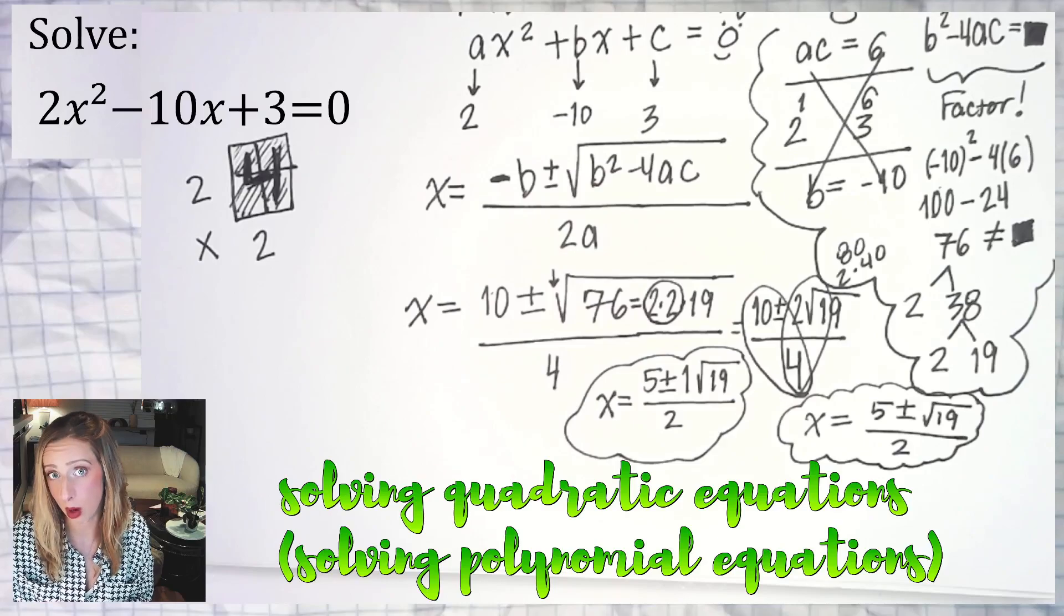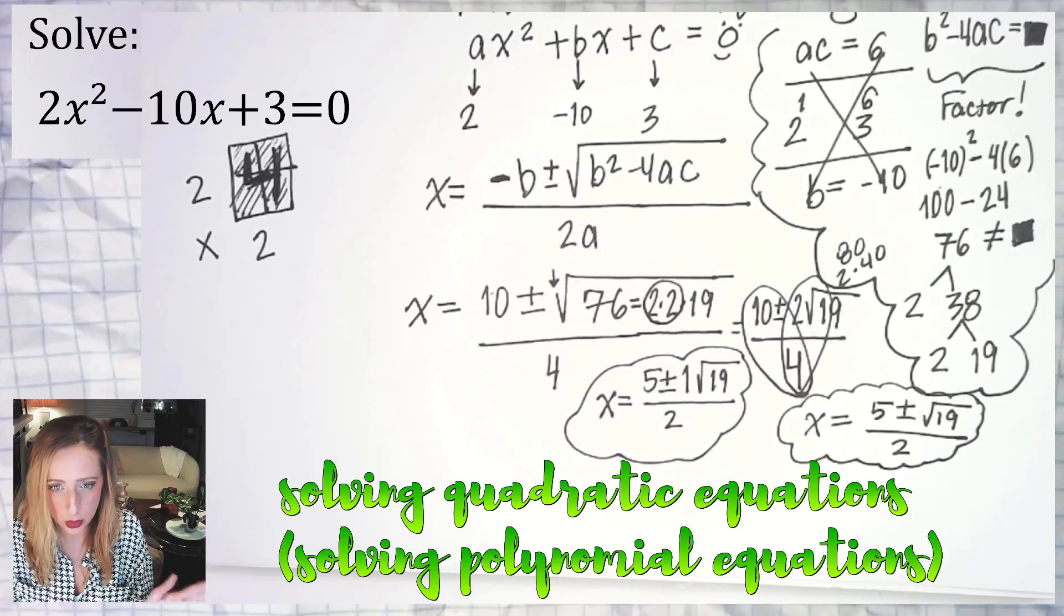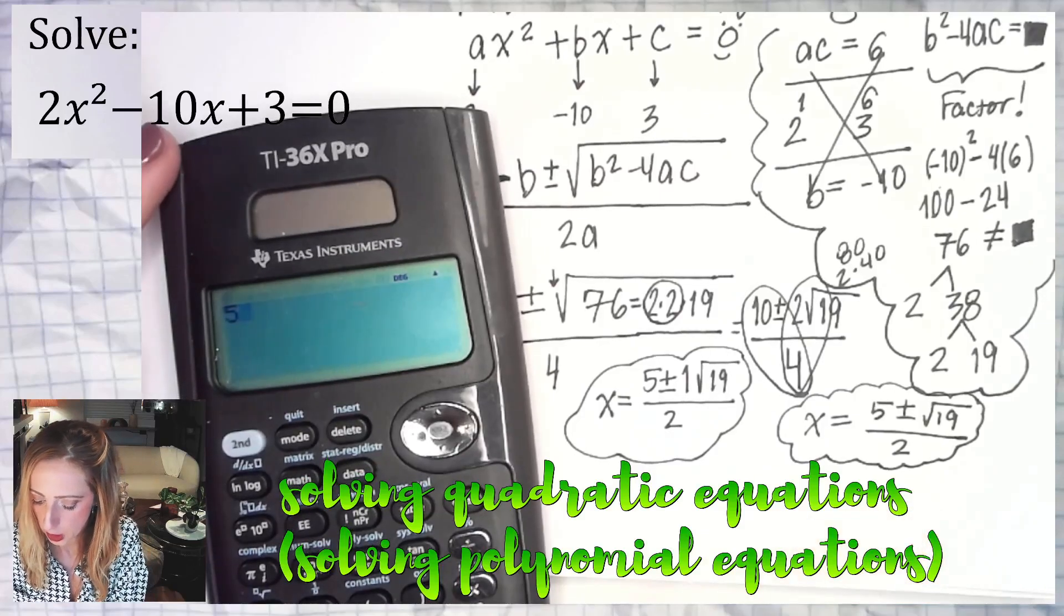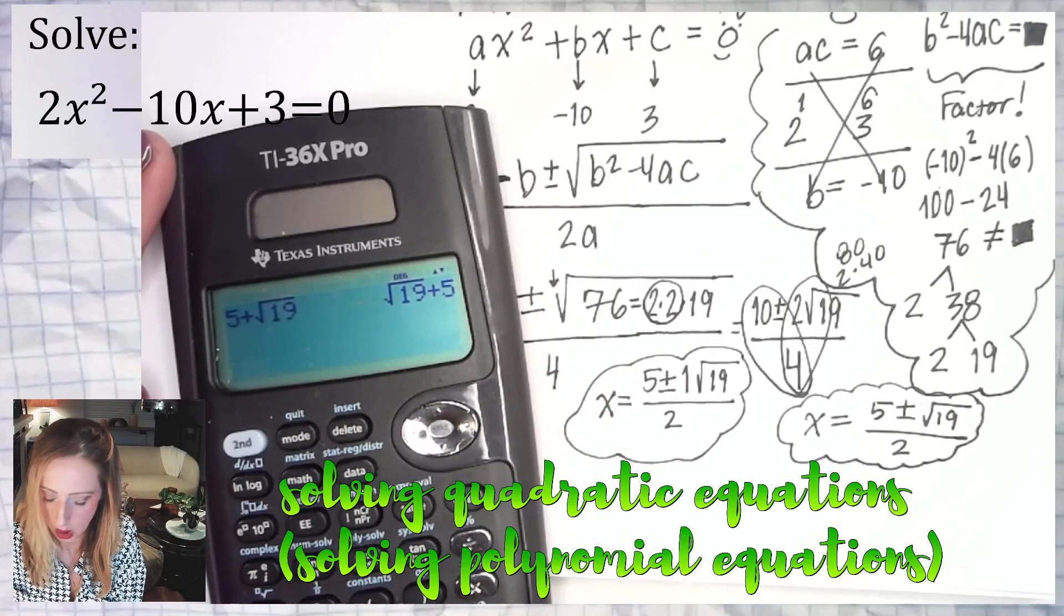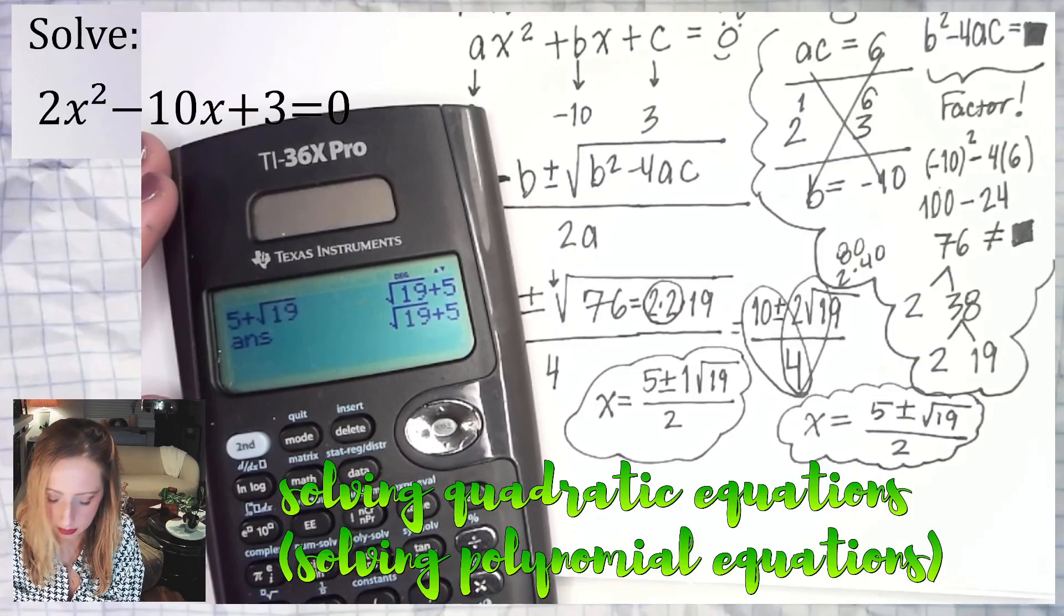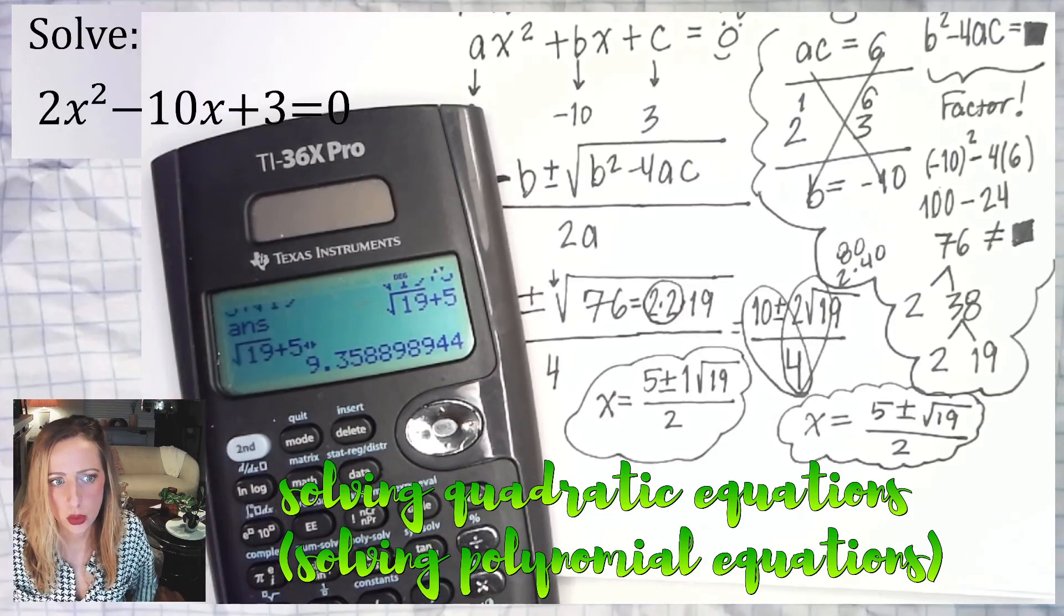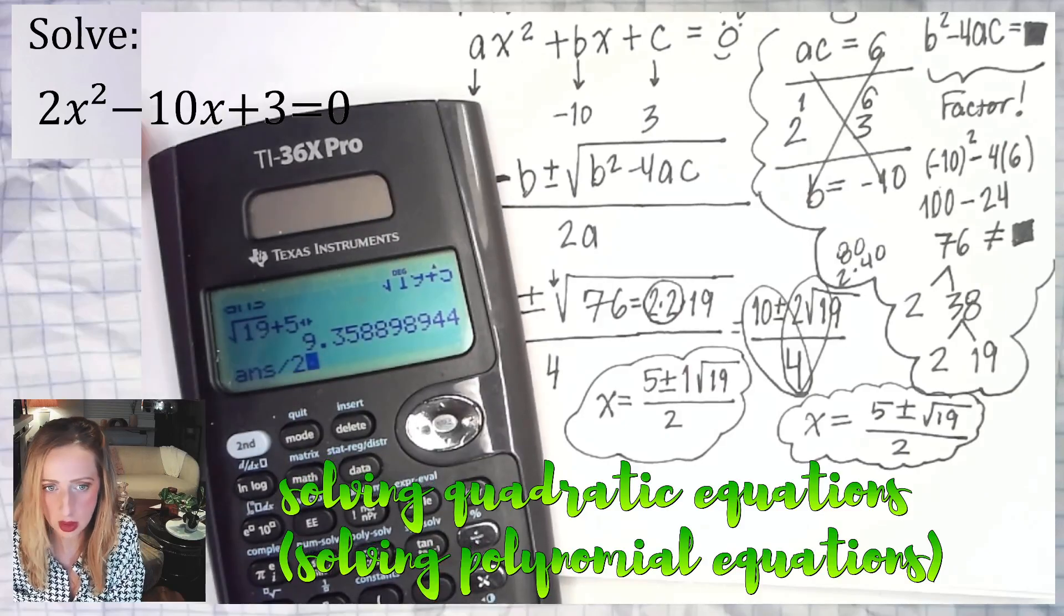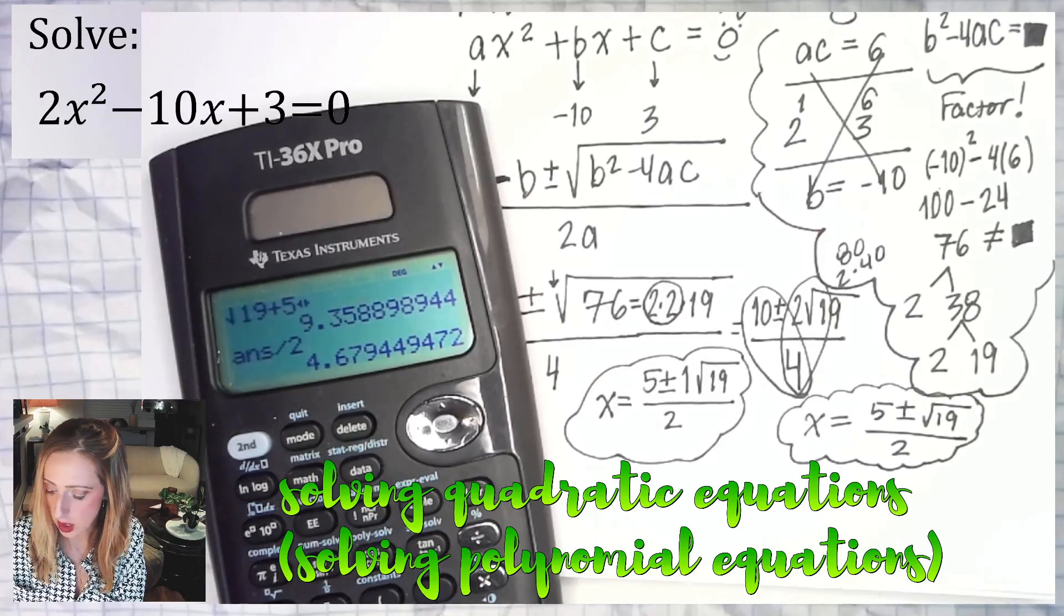However, if we wanted what we call an approximate answer where rounding will be involved, that means you bust out the calculator. I know it goes against what you might believe in your brain, but I promise you that's the situation. So what will we do? You would do one at a time. So 5 plus the square root of 19. Enter. Sometimes it just gives you that exact answer. So you might have to hit like second answer or approximately equal. So that right there is one of the answers. 4.679.